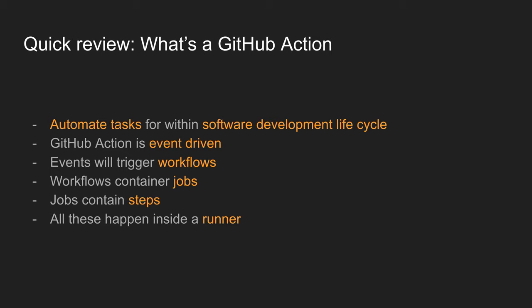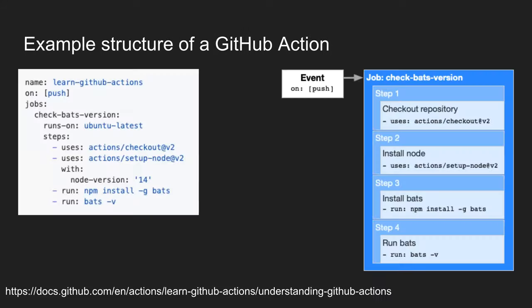A quick review of what a GitHub action is: it's a series of automated tasks that happen within a software development lifecycle. It's an event-driven system where events trigger workflows, workflows contain jobs, jobs contain steps, and all of these happen within a runner, which is essentially a virtual environment that boots up when the event is triggered.